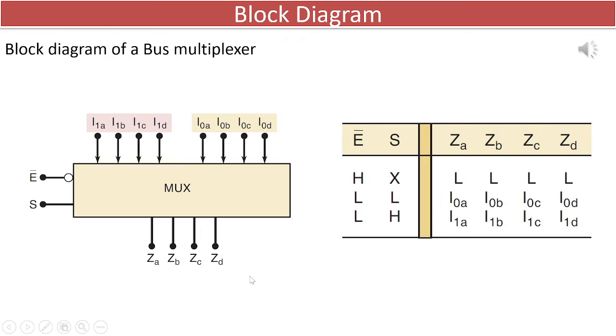In the scenario where the enable line is connected to high logic, the multiplexer is disabled and all outputs are low. The bus multiplexer is activated by pulling down the enable input.